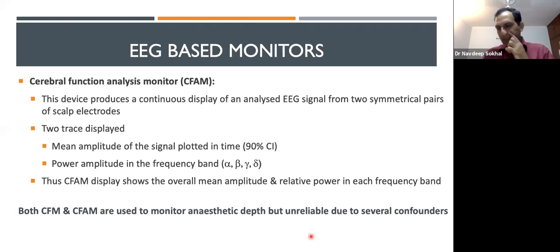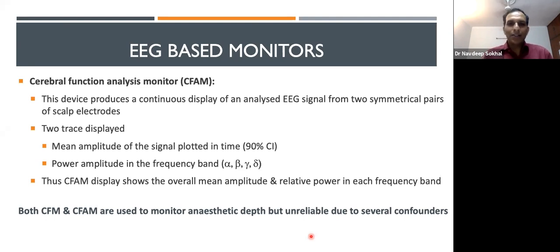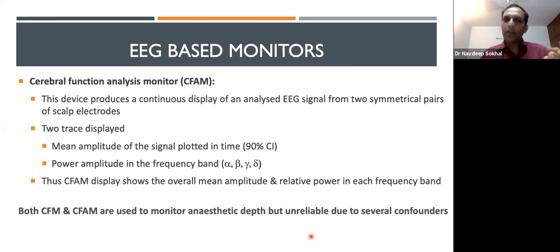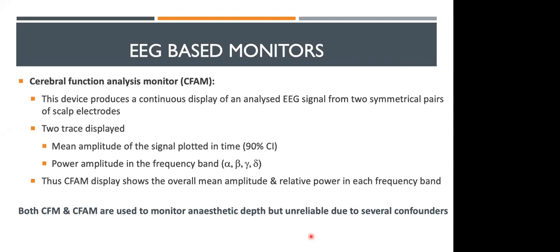BIS, entropy, and Narcotrend will be covered in the next class, focusing on more practical aspects used in operation theatres. A question from Dr. Pooja asked for clarification on power and power spectrum: simply put, FFT breaks the EEG signal into component frequency waves, and squaring those values gives the power spectrum. When power is plotted against frequency, we get the frequency distribution graph; plotting multiple such graphs against time gives the compressed spectral array.